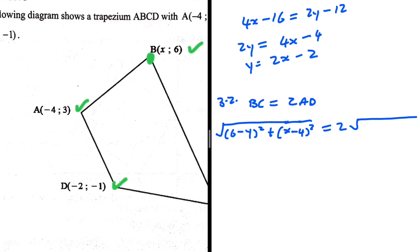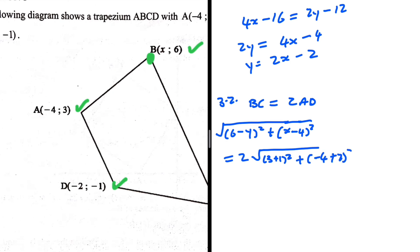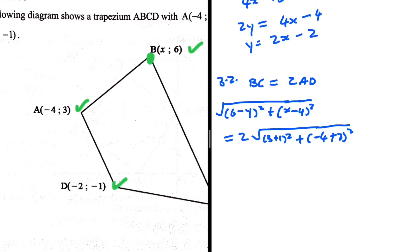For the length of AD: taking A as the second point, y₂ = 3, minus y₁ = −1, squared. Then plus (−4 + 2) squared. Let me rewrite this more clearly with space.